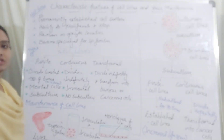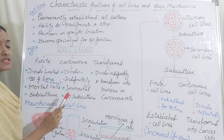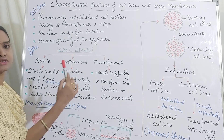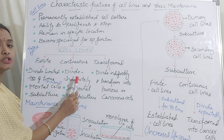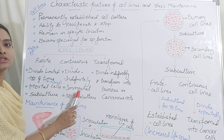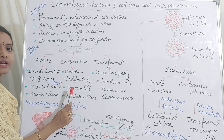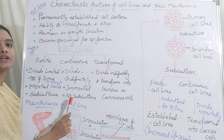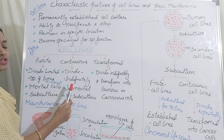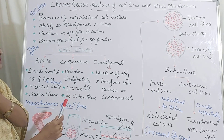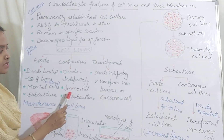Coming to the continuous cell lines — the name itself represents that they have ability to divide continuously, or indefinitely. So they divide continuously, hence they are called immortal cell lines. As these are immortal cell lines, there is no requirement for subculturing. As long as sufficient nutrients are provided, the cells will divide continuously.